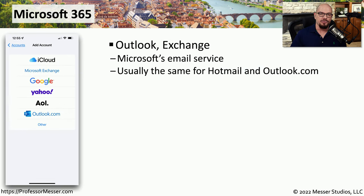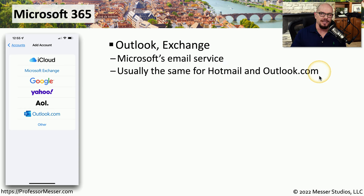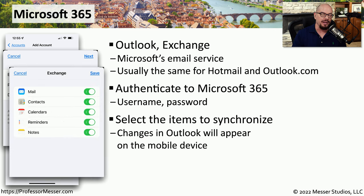Many organizations rely on Microsoft's email service to communicate with others within the organization, and they often use the cloud-based service of Microsoft 365. You can also use Microsoft Outlook or Microsoft Exchange if you're running your own Exchange servers. This is the same if you're using Microsoft's Hotmail or Microsoft's cloud-based Outlook.com service. This is one that requires you to authenticate to Microsoft 365, which is often just a username and a password. Once you add that authentication, you then gain access to your email settings, and you're able to enable and disable different items that you want to synchronize with that service.